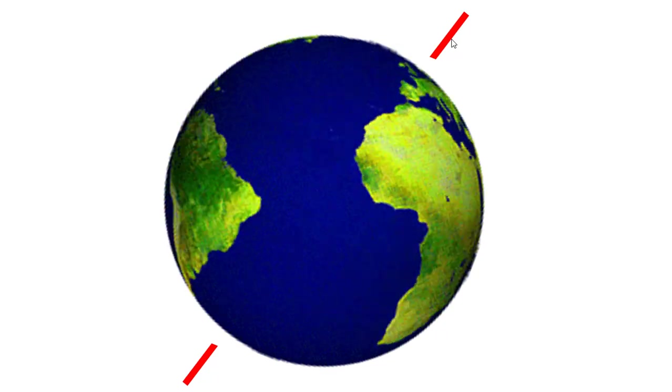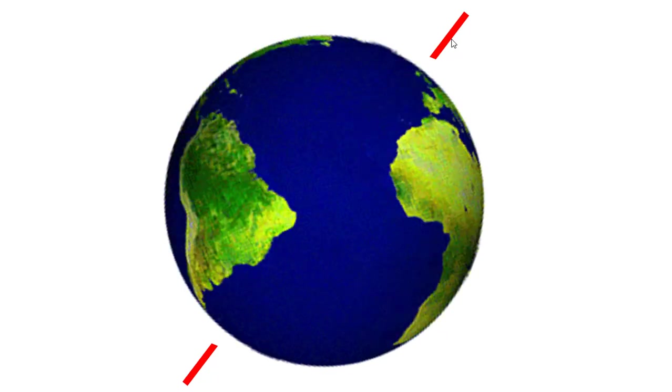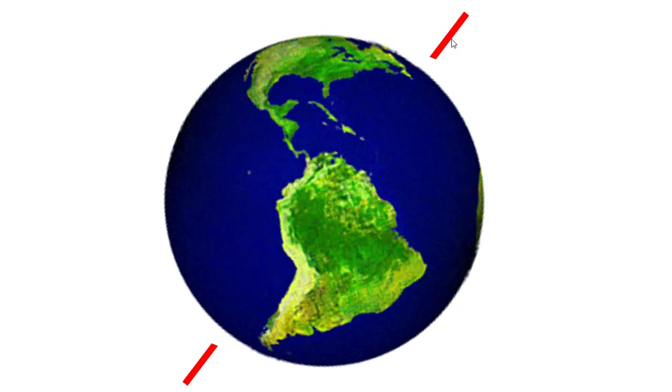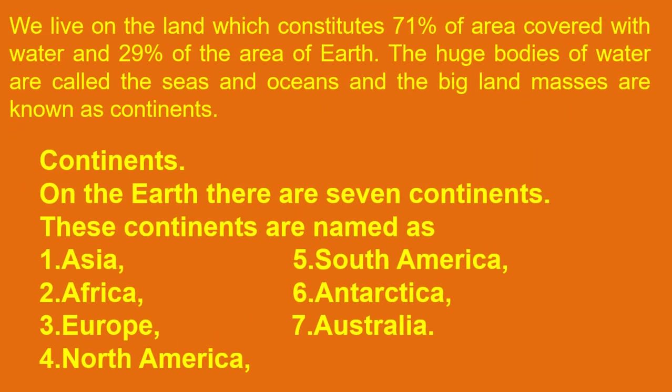On the globe we observe two colors: blue and yellow. 71% of the blue color refers to oceans and 29% of the yellow color represents continents. We live on the earth which consists of 71% area covered with water and 29% with land. The huge bodies of water are called seas and oceans.